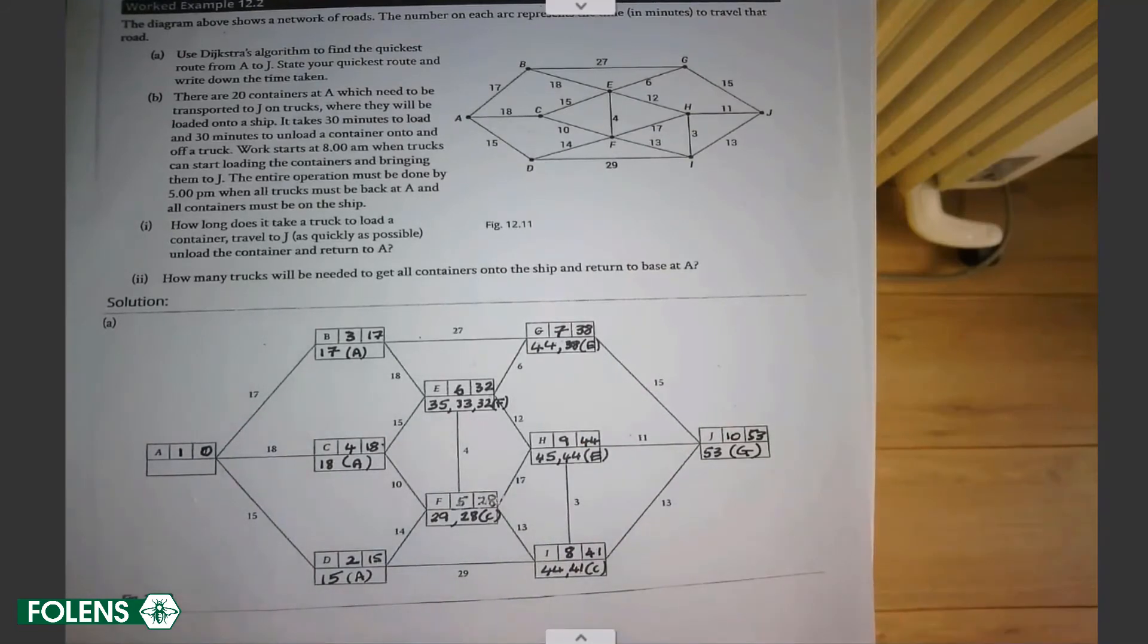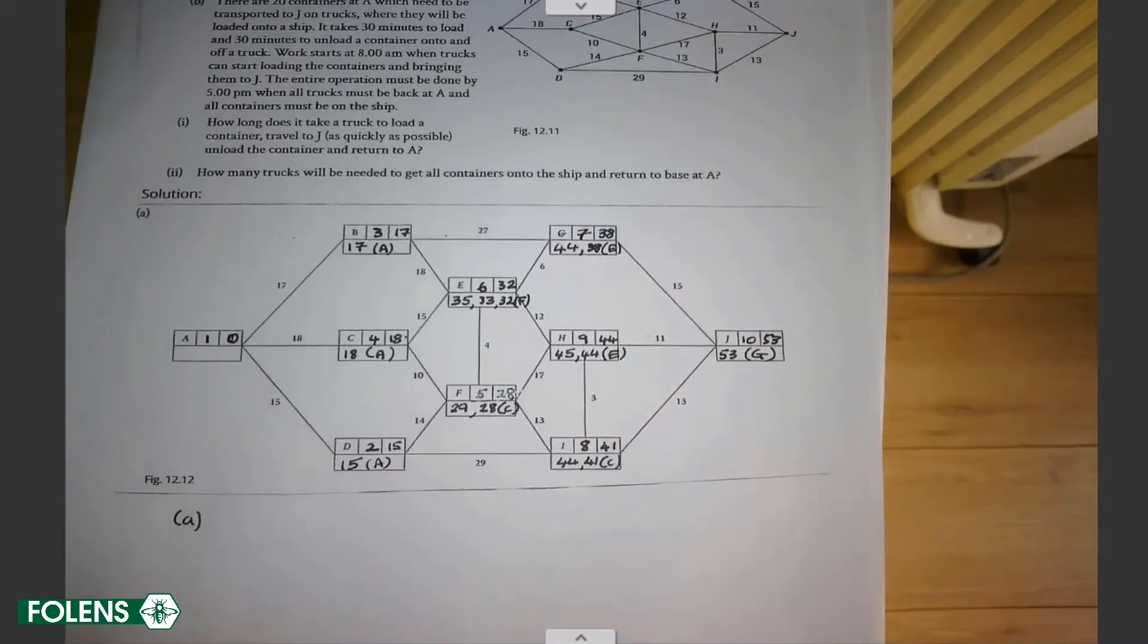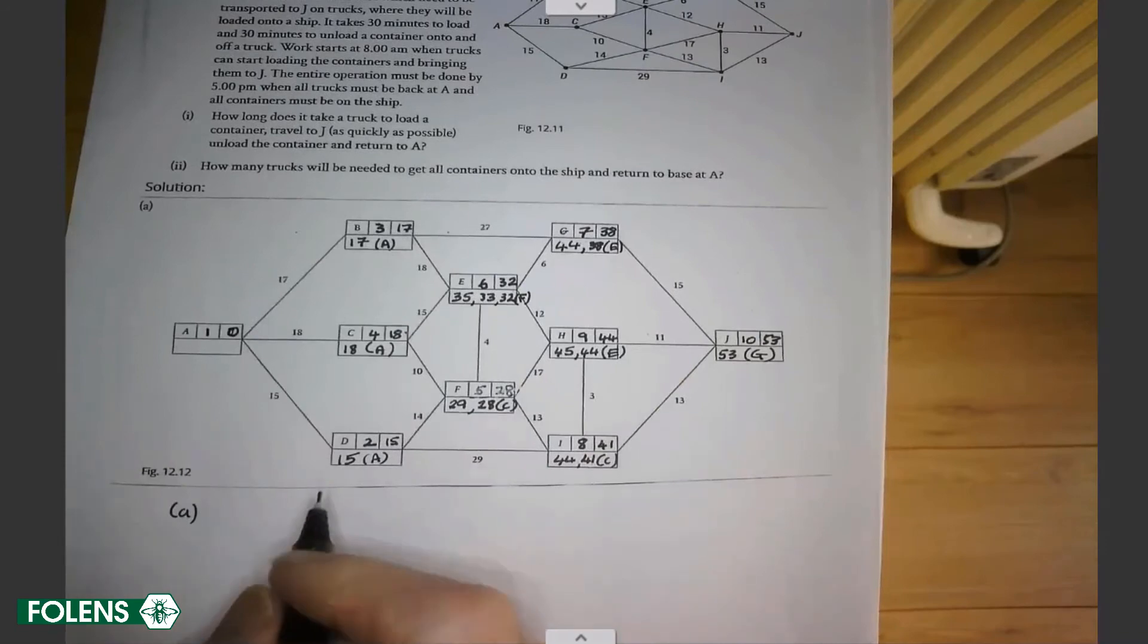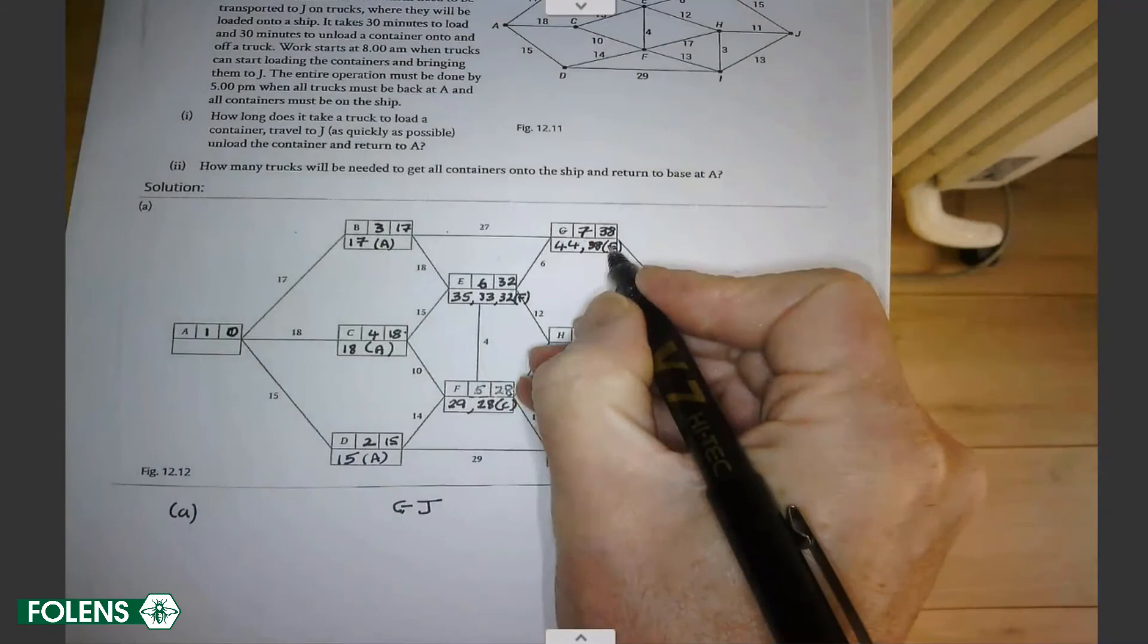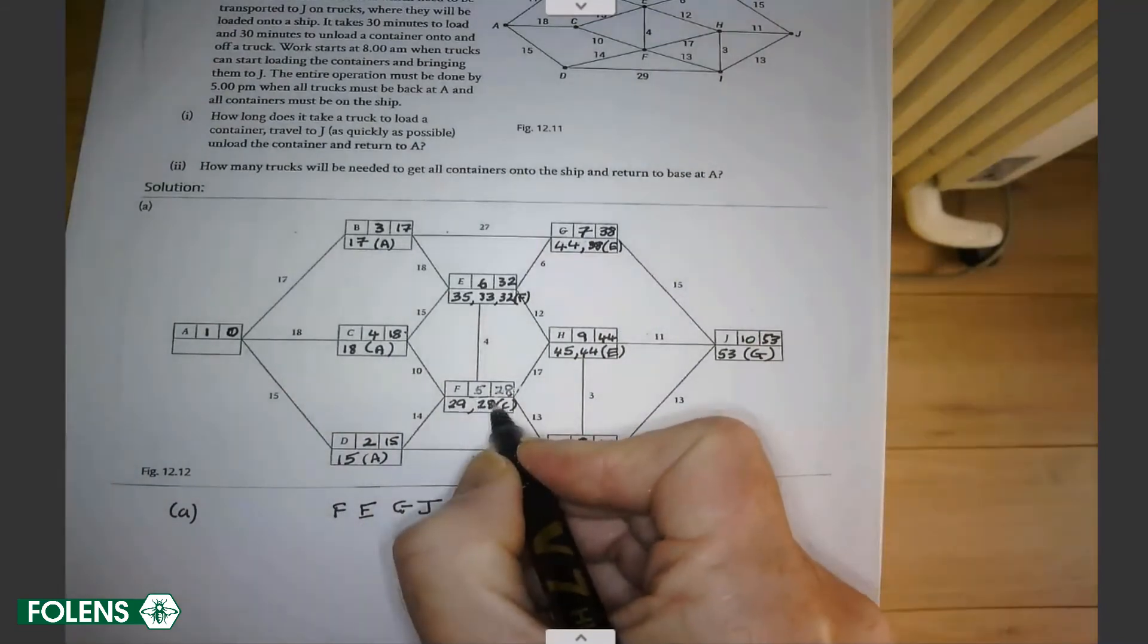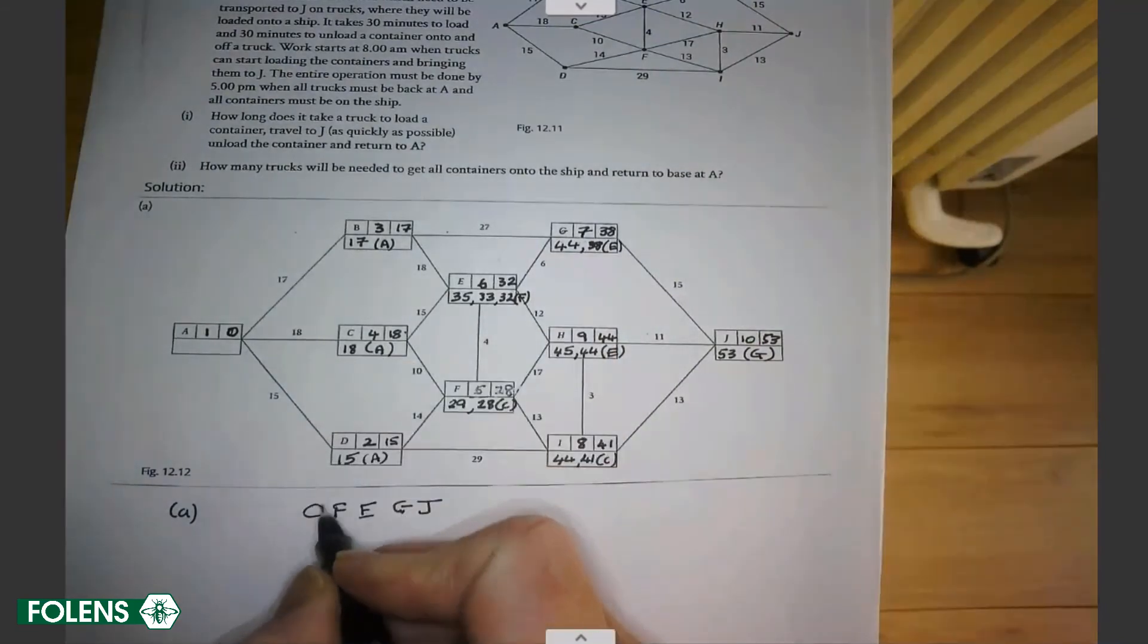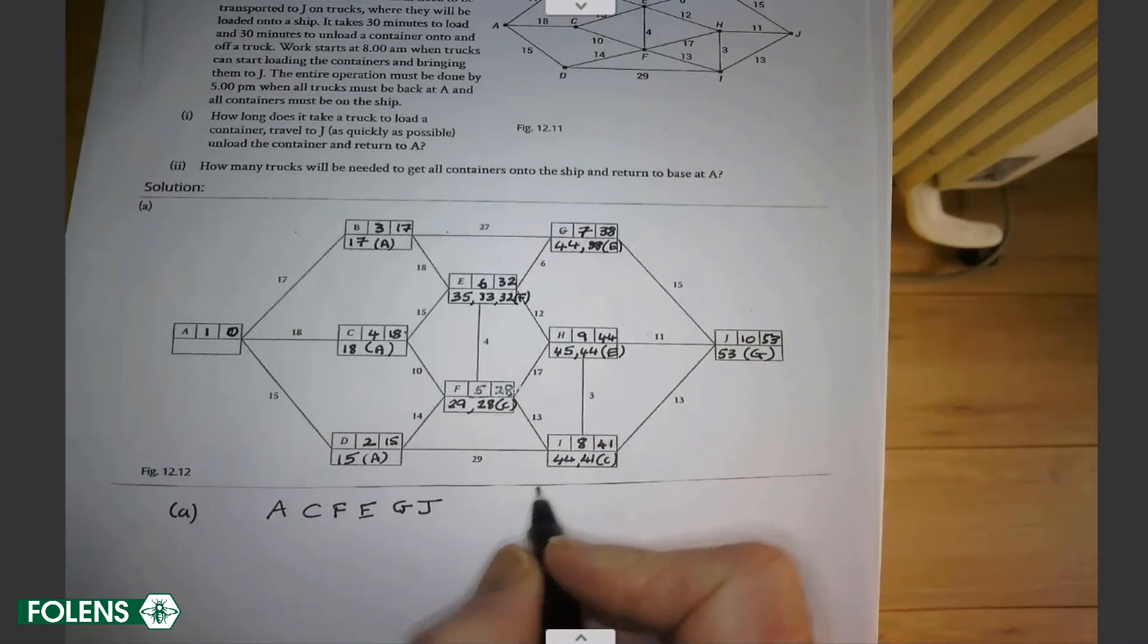So we have, we're going to answer the question. I'm just going to move that a little bit up. The answer to the question is what's the quickest route from A to J? Well, we ended at J. J came from G. Go back to G. G came from E. Go back to E. E came from F. Go down to F. F came from C. Go over to C. C came from A. That is the optimal path. That's the best route. And it took 53 minutes.